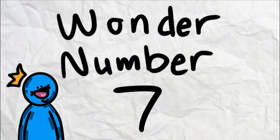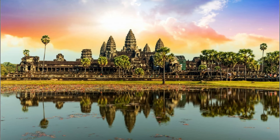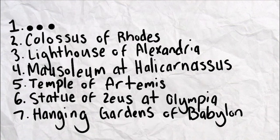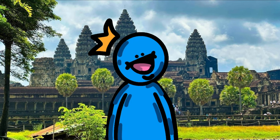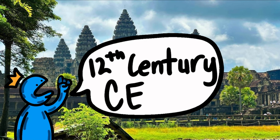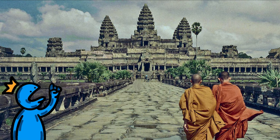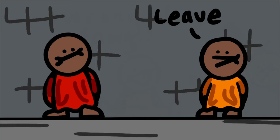Wonder number seven, the final one, Angkor Wat. I personally believe that if one of the seven wonders of the world never existed, then this would replace it. Being constructed in the 12th century CE, it was originally a Hindu temple dedicated to Vishnu, later becoming a Buddhist site.